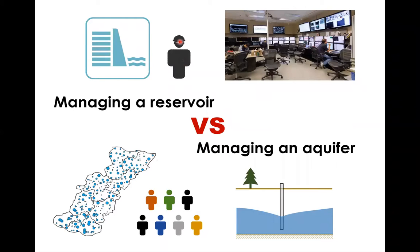Moreover, a reservoir can be easily controlled by a few people sitting in a control room operating the sluice gate on a computer, but for an aquifer there can easily be hundreds of wells. These wells are like micro sluice gates but they are owned by different users and each user thinks they are legitimate to use groundwater. So to manage the aquifer you have to manage the pumping by those heterogeneous users. In our case in Guantao County, which has an arable land of about 320 square kilometers, there are more than 7,000 wells in use — roughly 22 wells per square kilometer.